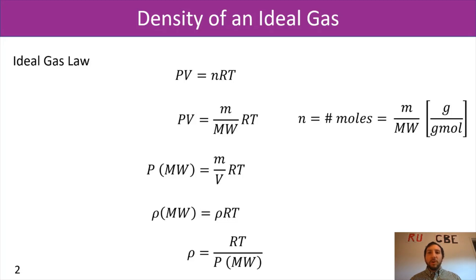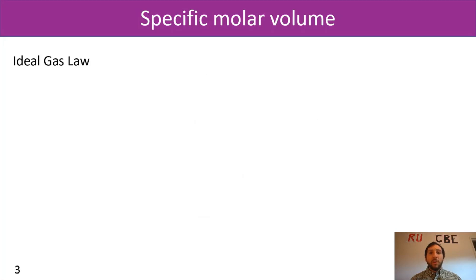As we talked about before, you can have density. You can also have that inverse density, which is specific volume. And that's the same thing here with this ideal gas law, where for our ideal gas law, we can have something called specific molar volume, where instead of density, we're going to have PV equals NRT.